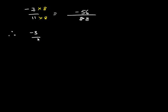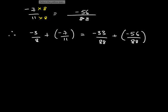Therefore, negative 3 upon 8 minus 7 upon 11 is equal to negative 33 upon 88 plus negative 56 upon 88. Now we have common denominators—that is, the denominators are the same for both rational numbers. So here we get over 88, and in the numerator it will be the sum of negative 33 and negative 56. So it will be negative 33 minus 56, so we end up with negative 89 upon 88.